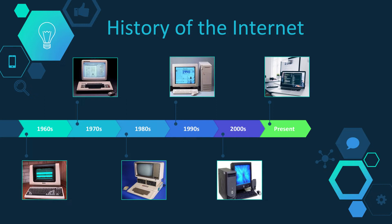Computers in the 1960s were large and immobile, and in order to use information stored in any one computer, one had to either travel to the computer's location or have magnetic computer tapes sent via the traditional postal system. The ARPANET, or Advanced Research Projects Agency Network, is the network that gave rise to what we now call the internet. The ARPANET was a huge success, but membership was restricted to academic and research institutions with contracts with the Defense Department in the United States.